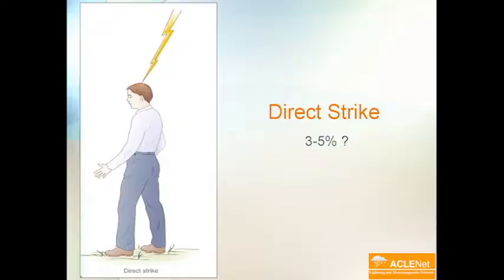Many people only know about the direct strike. That's when lightning comes down from the cloud and gets you right there. But there are so many other ways that you can be injured by lightning, and direct strikes are actually only about three to five percent of the deaths that we see in developed countries.